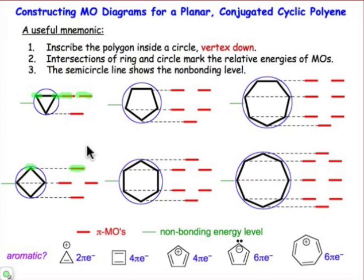The only other thing I need to tell you is that this line that cuts through the middle of the circle, the semicircle or hemisphere line, represents the energy level of an atomic p orbital. And so any electrons that occupy positions and energy below that line will contribute toward bonding interactions. Any electrons at that level will be non-bonding, and any electrons above that line will be anti-bonding.